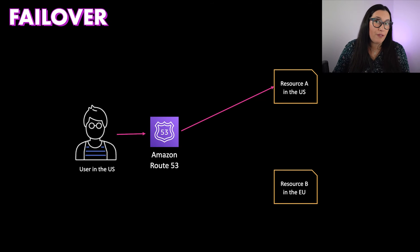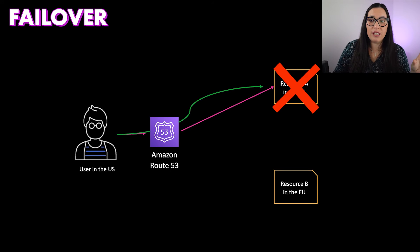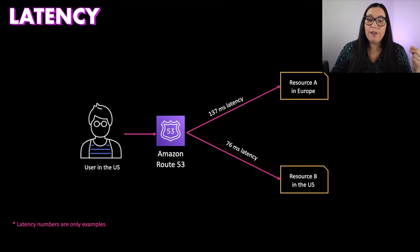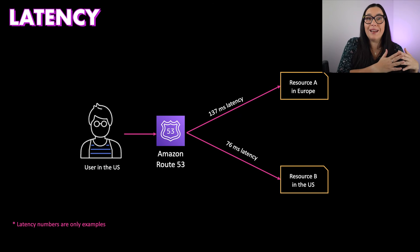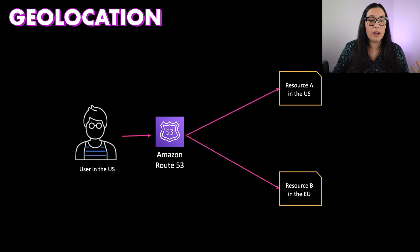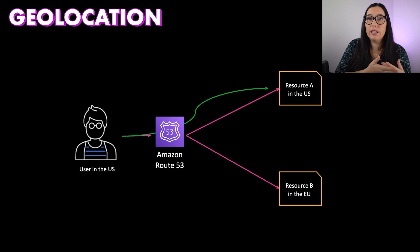Then we have failover routing — if the main record is down, it will route traffic to a secondary region or resource, and this is done based on health checks. We'll see a demo in a future video. Then there's latency-based routing, where the resource selected for the customer is the one with the lowest latency — done automatically. Finally, geolocation routing uses the user's geographic location to route them to the closest region, which is especially useful for multi-region scenarios bound by data and legal requirements.